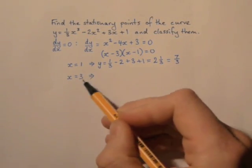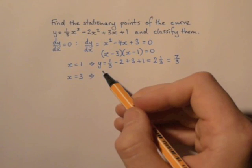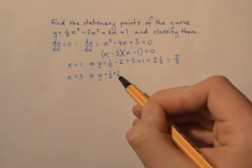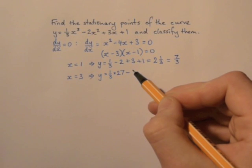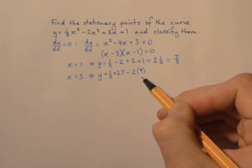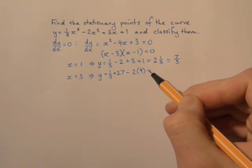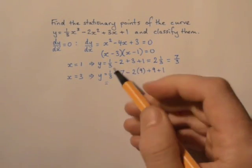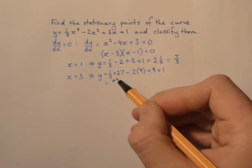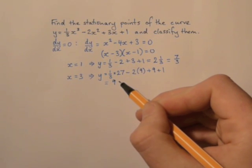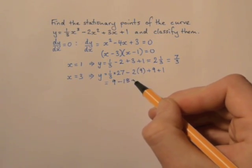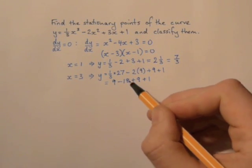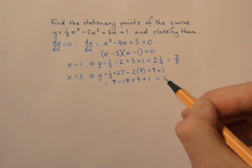When x equals three, the other stationary point, if we substitute that in, we're going to get y is equal to a third times three cubed, which is 27, minus two times nine, which is three squared, plus nine, three times three, plus one. And that tidies up to nine minus 18 plus nine plus one. Nine and nine make 18, take away 18, plus one just becomes one.